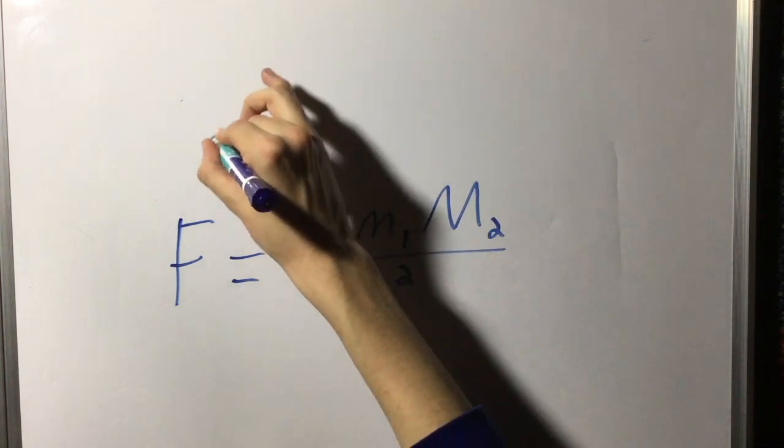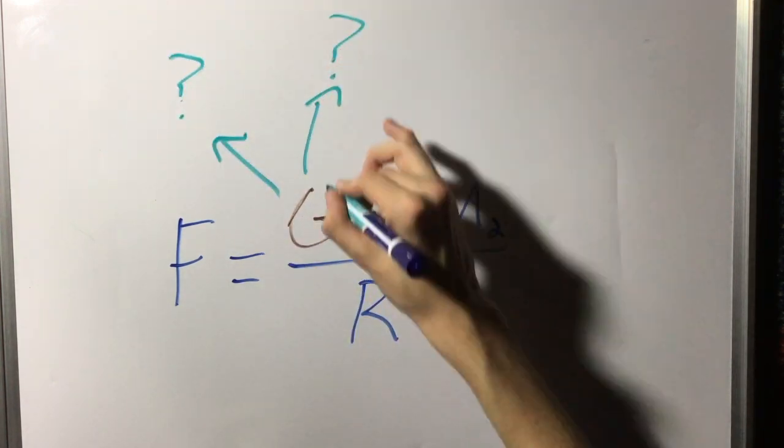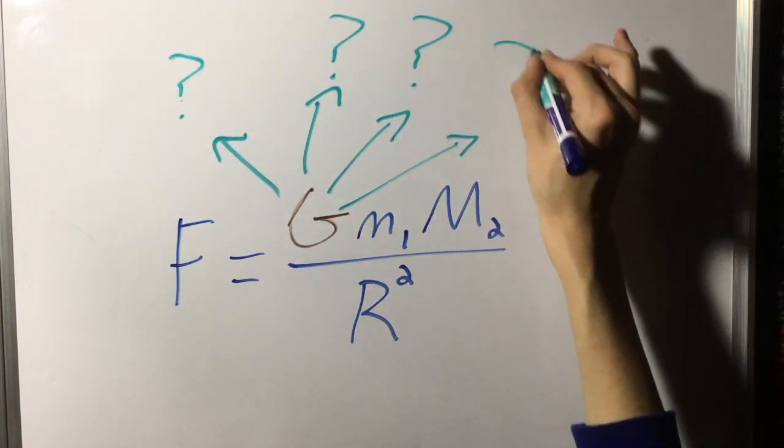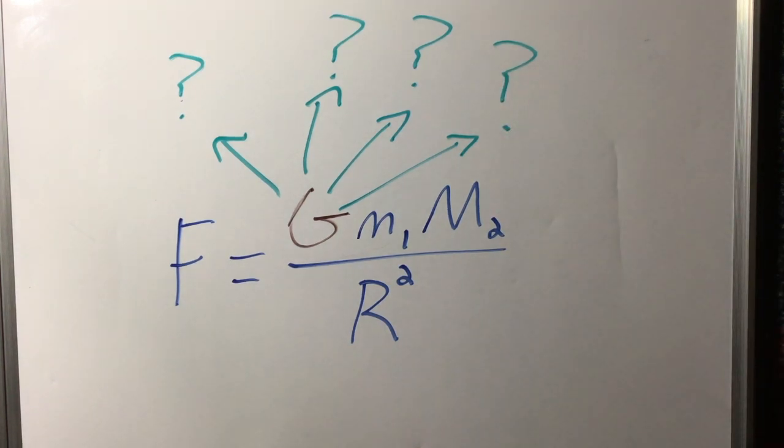However, for years afterwards, most scientists simply disregarded G, thinking it to be just a proportionality constant and therefore unimportant.